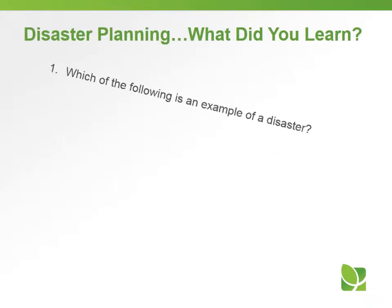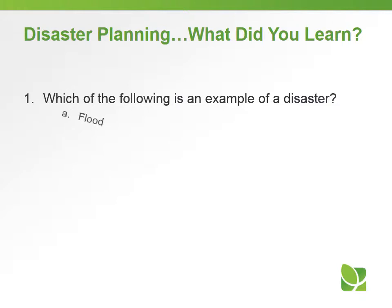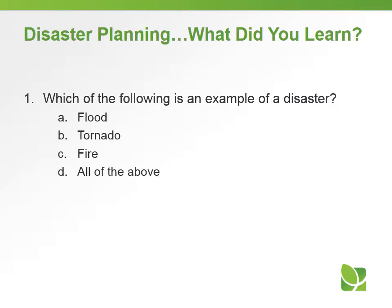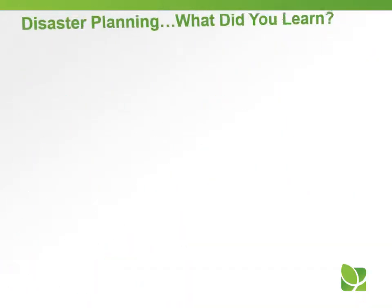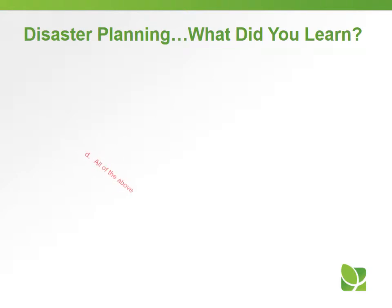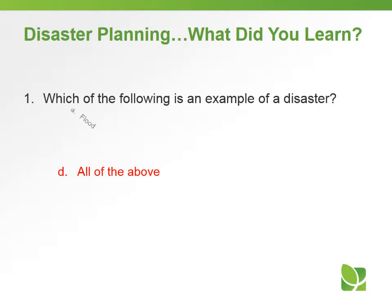Let's take a short quiz on disaster planning. Question one: which of the following is an example of a disaster? A) a flood, B) a tornado, C) a fire, or D) all of the above? The answer is D, all of the above. Floods, tornadoes, and fire are all considered a disaster.